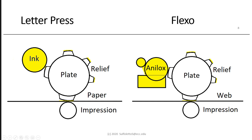Similar to letterpress is flexography, or flexo, which also uses a relief plate — but now the plate is soft rubber or photopolymer. There's a very simple inking system called an anilox — a uniformly engraved roller that transfers ink to the top of the relief plate, which then makes direct contact with the paper. Flexography is almost always web or roll-fed.